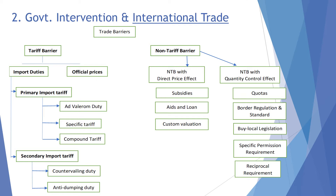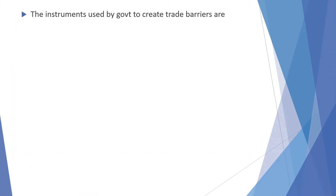Under primary import tariff there are three types: ad valorem duty, specific tariff, and compound tariff. Under secondary import tariff we have countervailing tariff and anti-dumping tariff. Under non-tariff barriers there are barriers with direct pricing effect and barriers with quality control effect. Under direct price effect there are subsidies, premium tariffs, aids, and custom valuation. Under quality control effect there are quotas, border regulations, standards by local legislation, specific permission required, and reciprocal requirements.